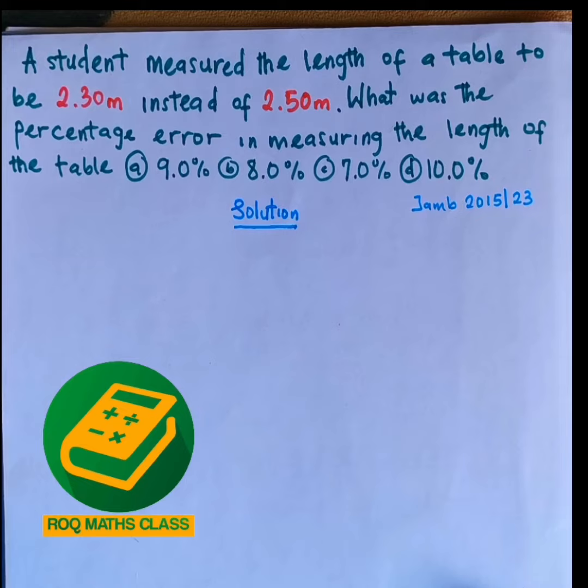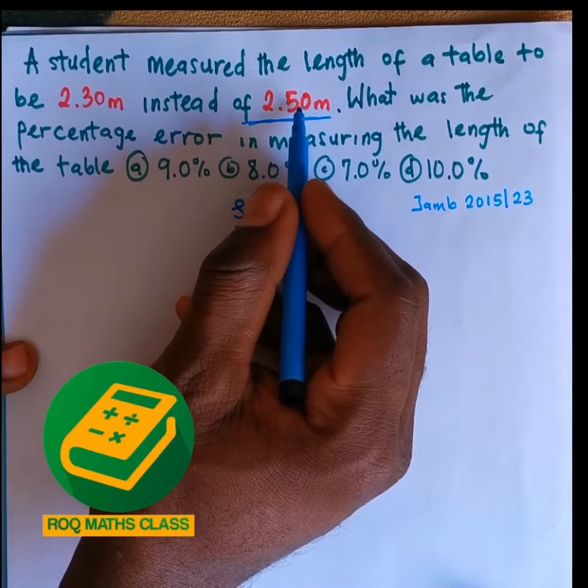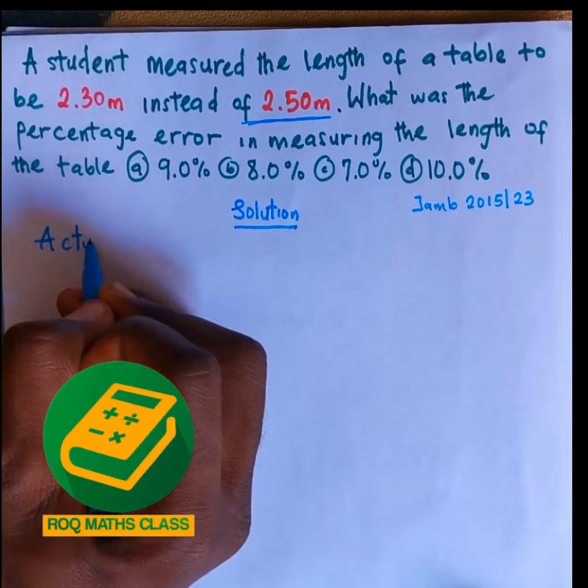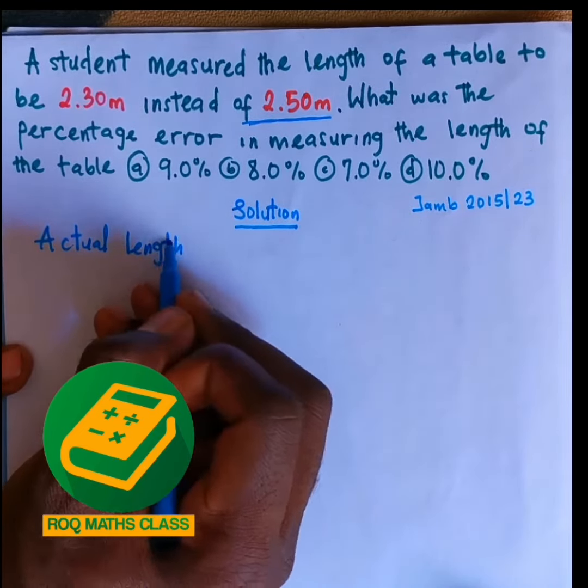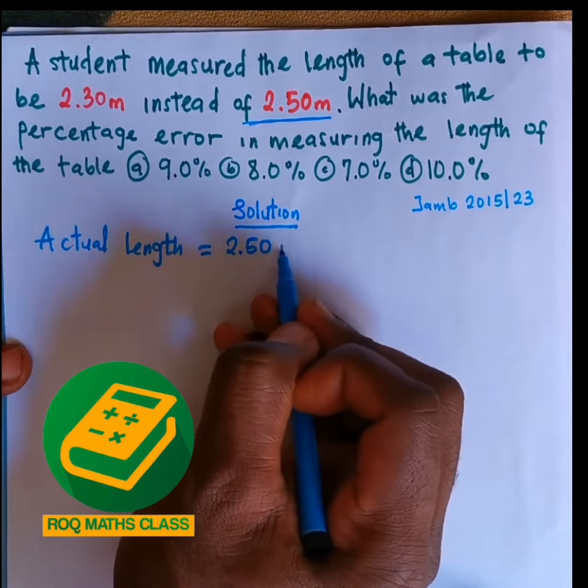If you look at this question carefully, we're going to see that our actual length is 2.50 meters. So the actual length is equal to 2.50 meters.